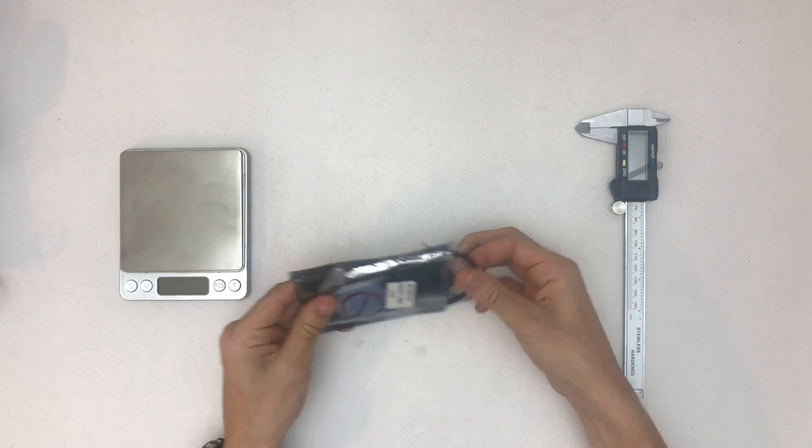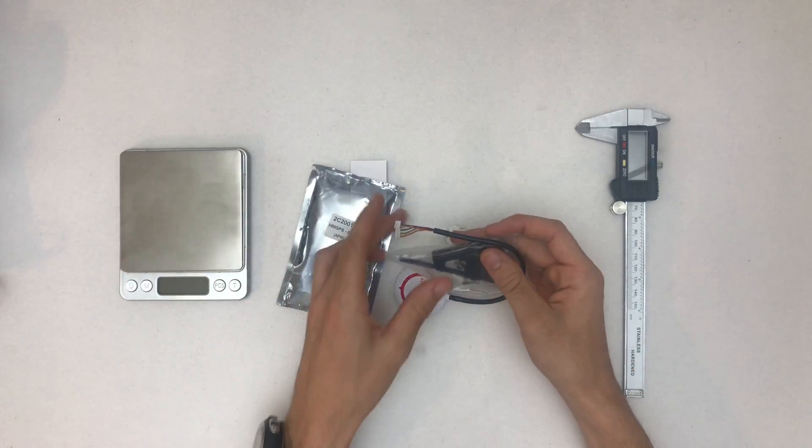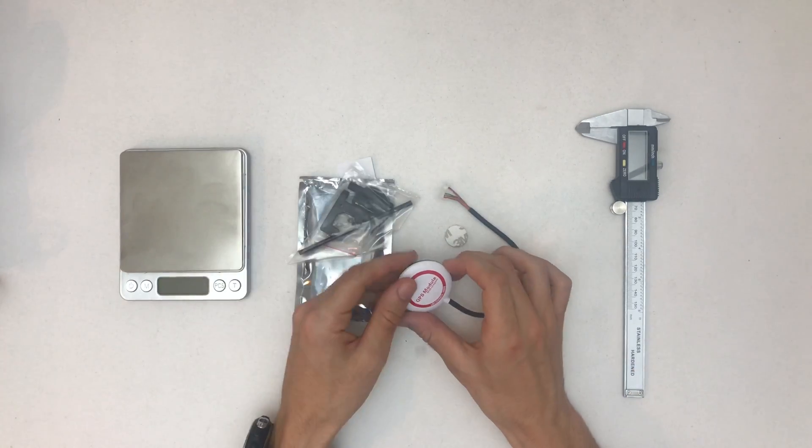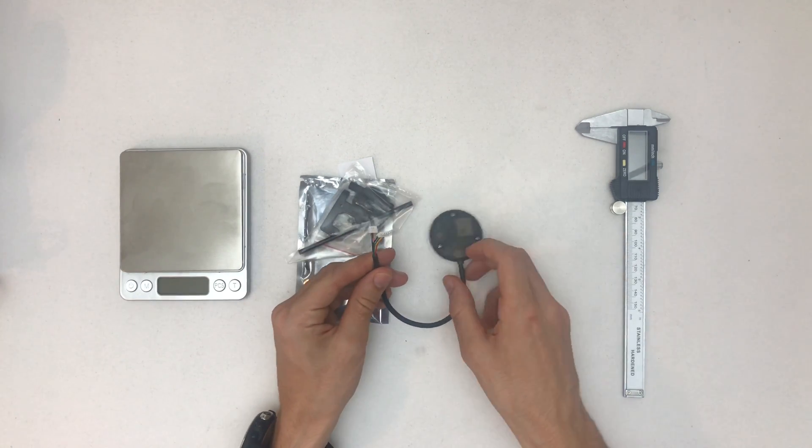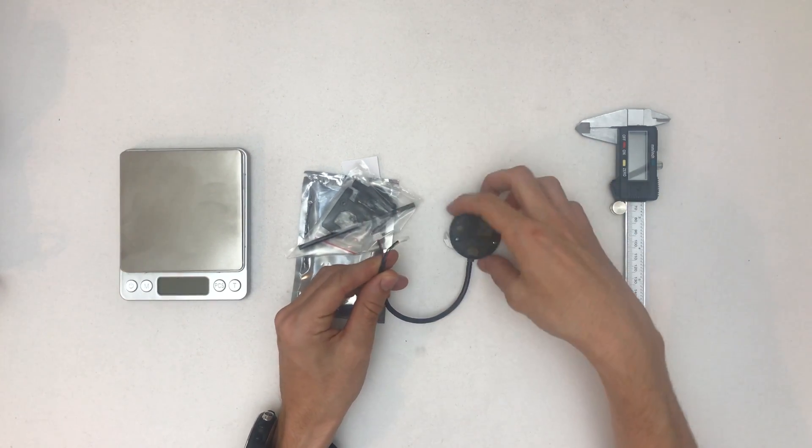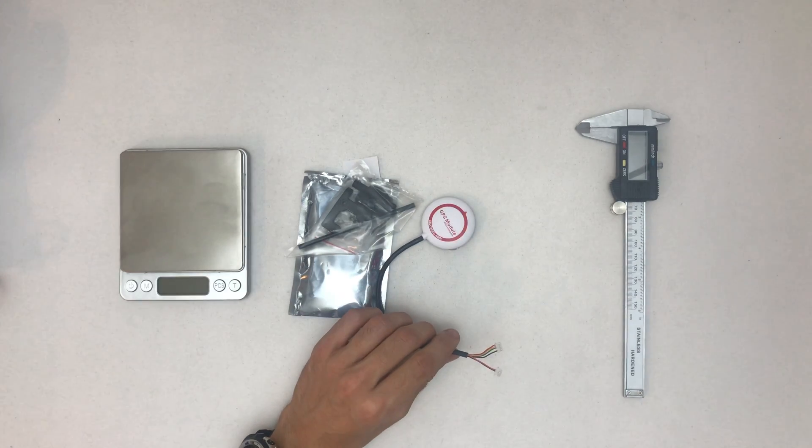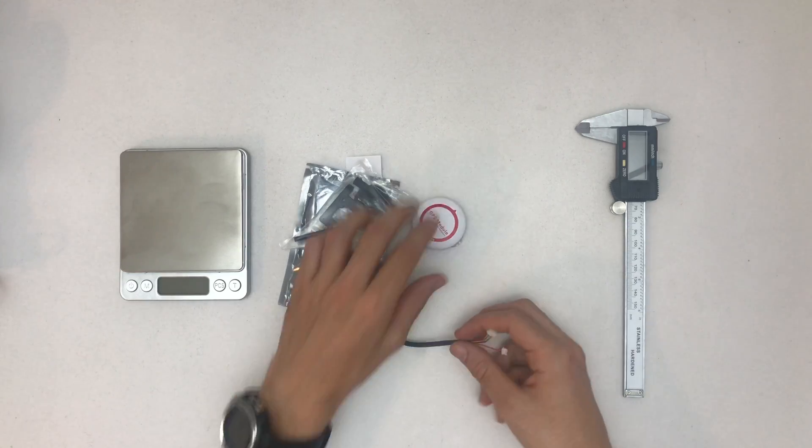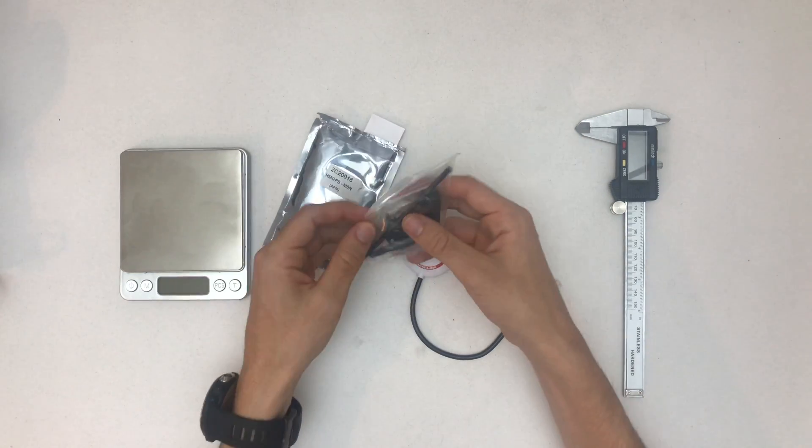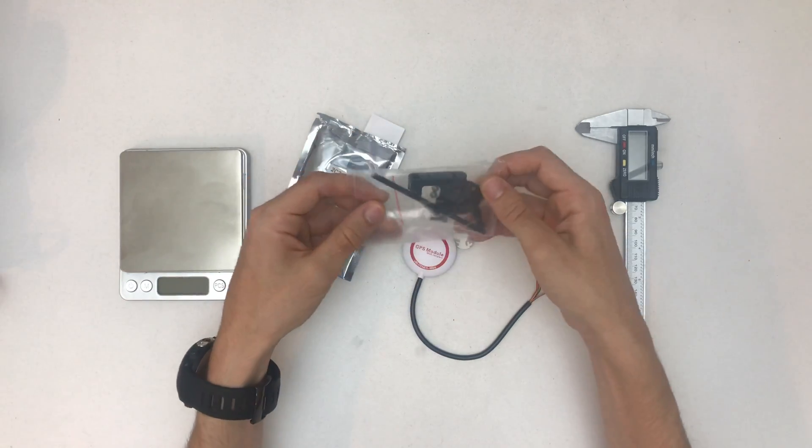So I specifically wanted this module with the built-in compass. That's why it has two connectors, and this is called, let me check, this is the Pixhawk version. So it actually does come with a little stand as well.